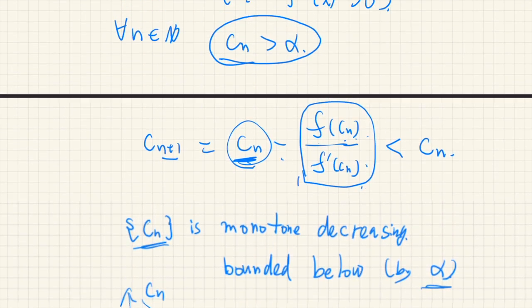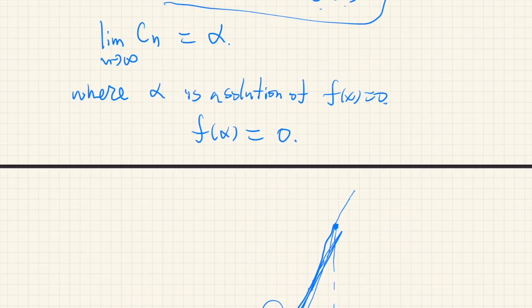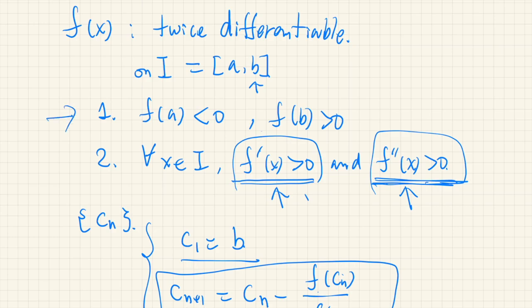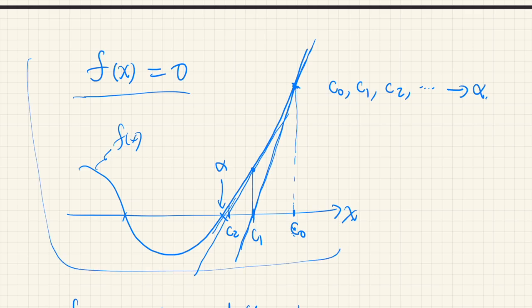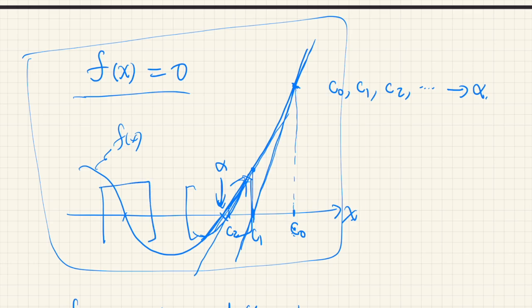In this theorem we imposed a number of conditions on the function. You should experiment with other conditions. For example, in this particular case Newton's method works for the solution where the function is increasing and convex — the conditions are satisfied. But what about the part where it's decreasing and not convex? You should experiment — if you apply Newton's method regardless, sometimes it works and sometimes it doesn't.